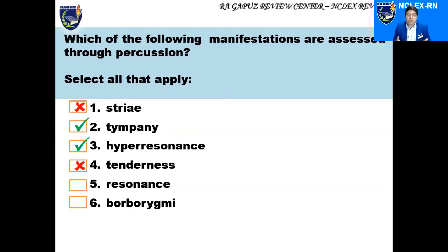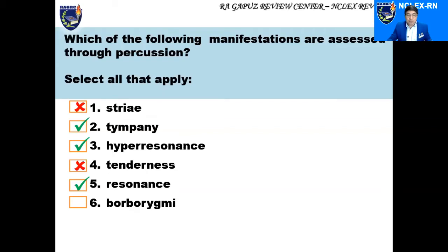Resonance is a low-pitched sound that indicates normal lung tissue. When fluids accumulate, resonance is replaced by dullness, such as in the case of pneumonia. So we put a check for resonance as it is assessed through percussion. Borborygmy is a gurgling sound due to the accumulation of fluids or gas, like in patients with irritable bowel syndrome, and this is assessed by auscultation — so we put an X. The correct answers are tympani, hyperresonance, and resonance.